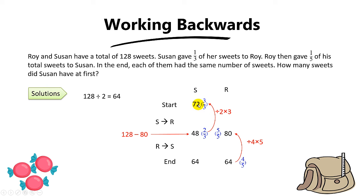So this will stand for the number of sweets that Susan had at first, which is three over three. Three over three means the total sweets at first. And to find the sweets of Roy at first, you take 128 minus 72. You get 56. So this will be the number of sweets that Susan had at first and Roy have at first. The question asked for the sweets that Susan had at first. So the answer will be simply 72 sweets.